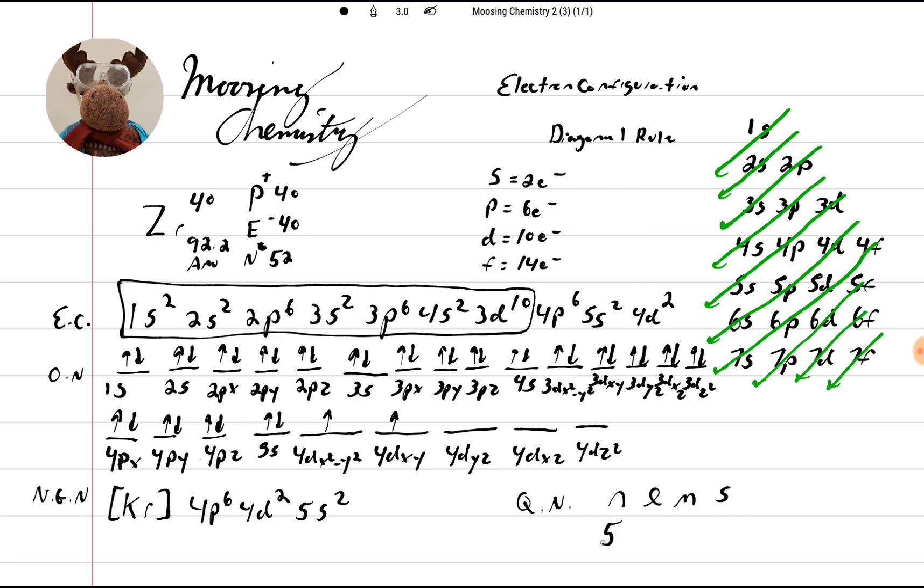So it's in the fifth period. So N would be 5. And then it's in the D block. So it's going to be N minus 1, which would be 5 minus 1, would be 4. The M value, since it's in the D block, is going to be, S is 0, P is 1, D is 2.